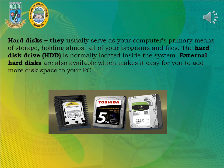Hard disks usually serve as your computer's primary means of storage, holding almost all of your programs and files. The hard disk drive — HDD — is normally located inside the system unit. External hard disks are also available, which makes it easy for you to add more disk space to your PC.